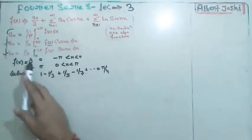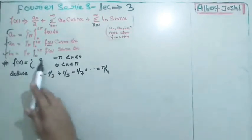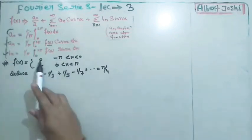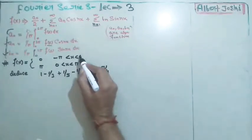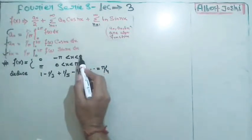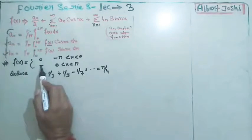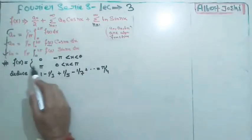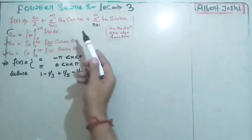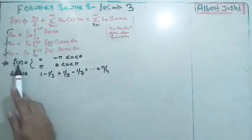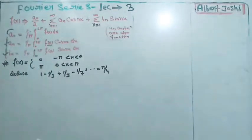This is lecture number three where we will solve exam questions. The function f(x) is defined as 0 for x in (−π, 0) and π for x in (0, π). This function is discontinuous at zero because the value is 0 just below zero and π just above zero. The Fourier series can still represent discontinuous functions.